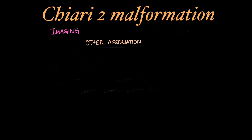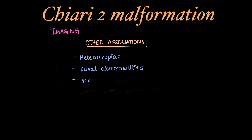Other associations to look for in Chiari 2 malformation are heterotopias, dural abnormalities, vertebral anomalies, hydrocephalus, and syrinx.